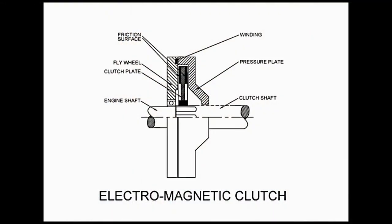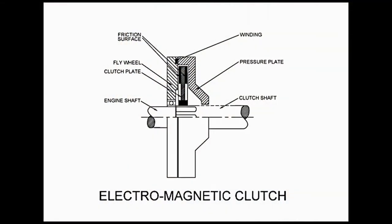This addresses one of the key requirements of the clutch — transfer of motion when we desire. The other requirement is that motion should be transferred gradually. This is fulfilled by supplying current to the coil gradually. The intensity of current is increased gradually, which causes magnetization of the soft iron piece gradually. The magnetic field and therefore the magnitude of the magnetic force increases gradually, so the motion is gradually transferred to the clutch shaft.